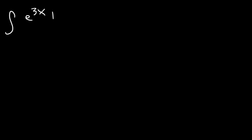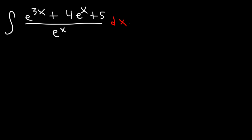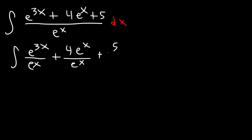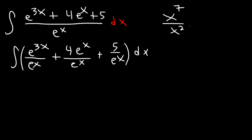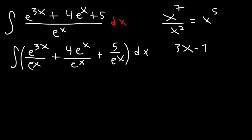Next: the antiderivative of (e to the 3x plus 4e to the x plus 5) divided by e to the x dx. Since there is only one term in the denominator, split the fraction into three smaller fractions: e to the 3x over e to the x, plus 4e to the x over e to the x, plus 5 over e to the x. For the first term, subtract exponents: 3x minus x equals 2x, giving e to the 2x.